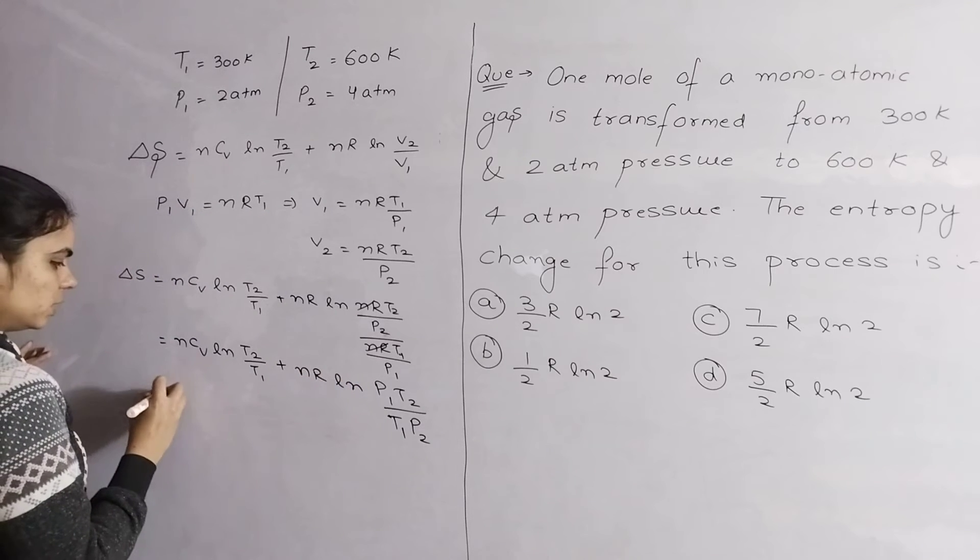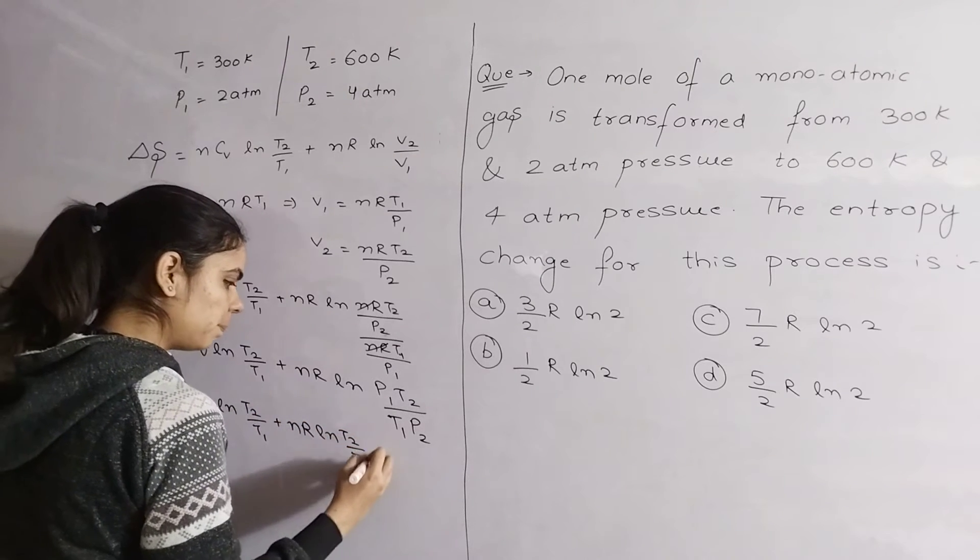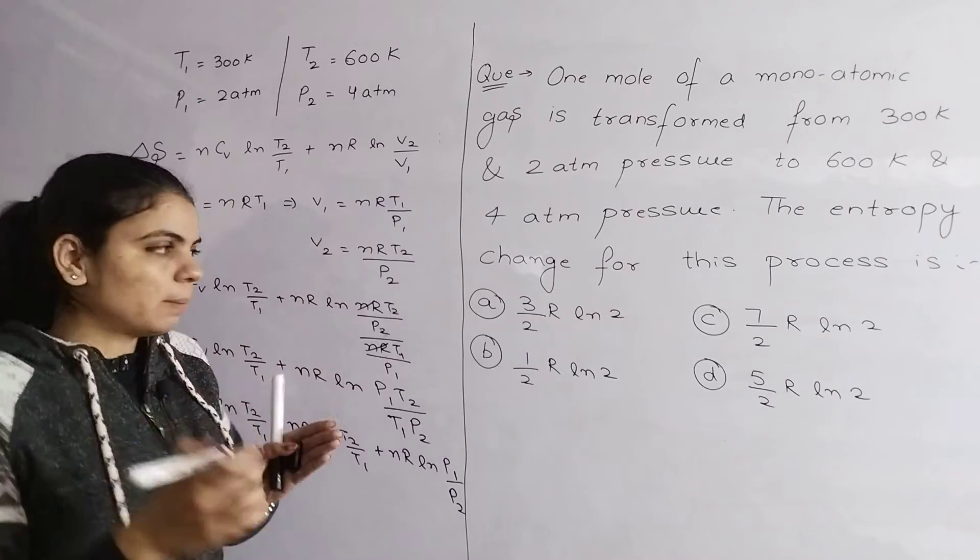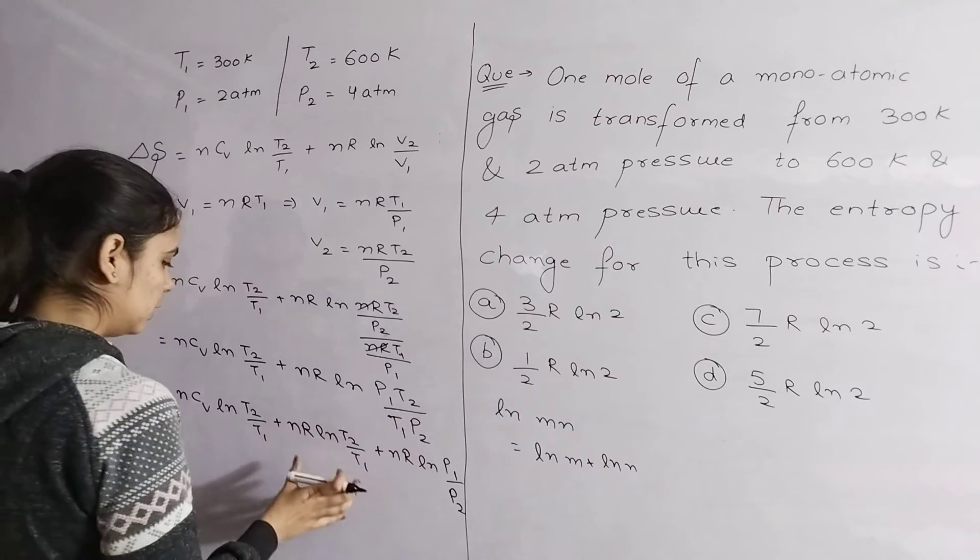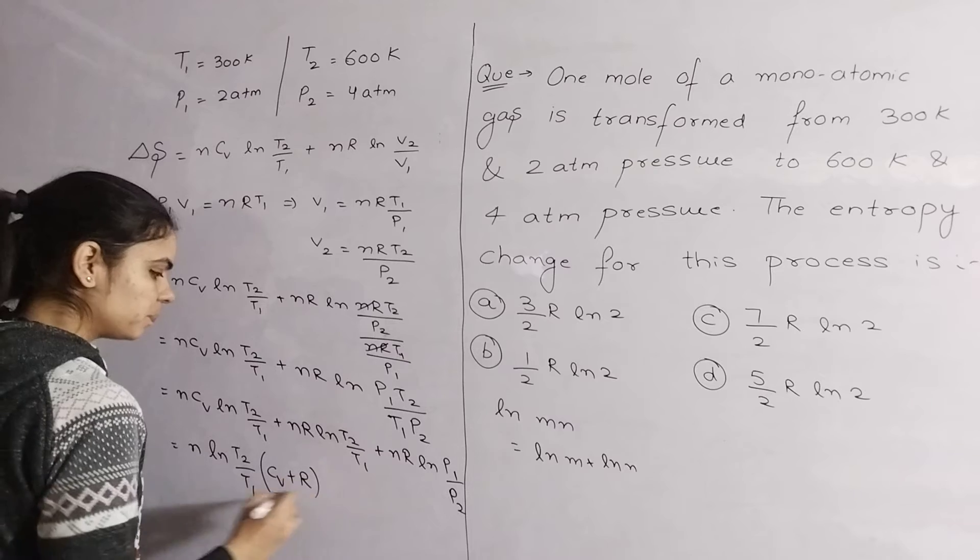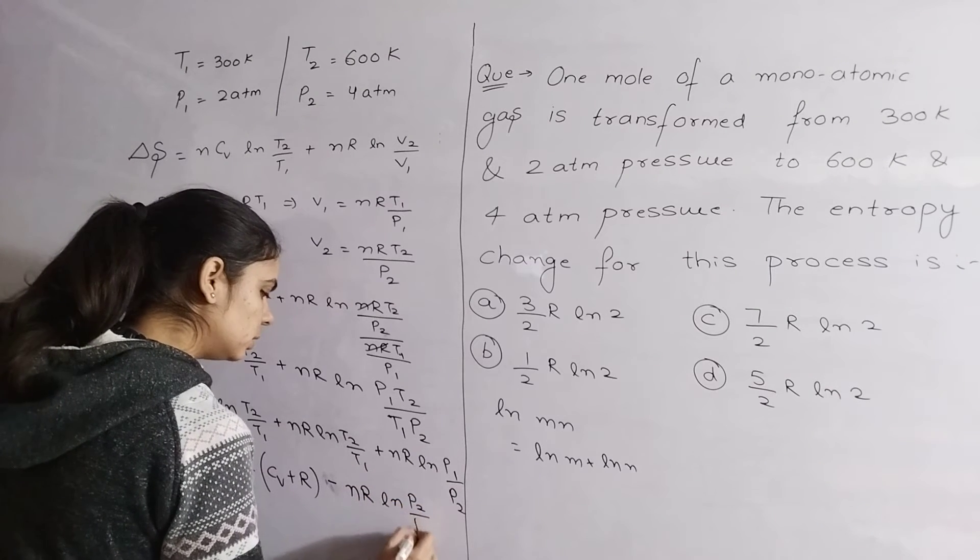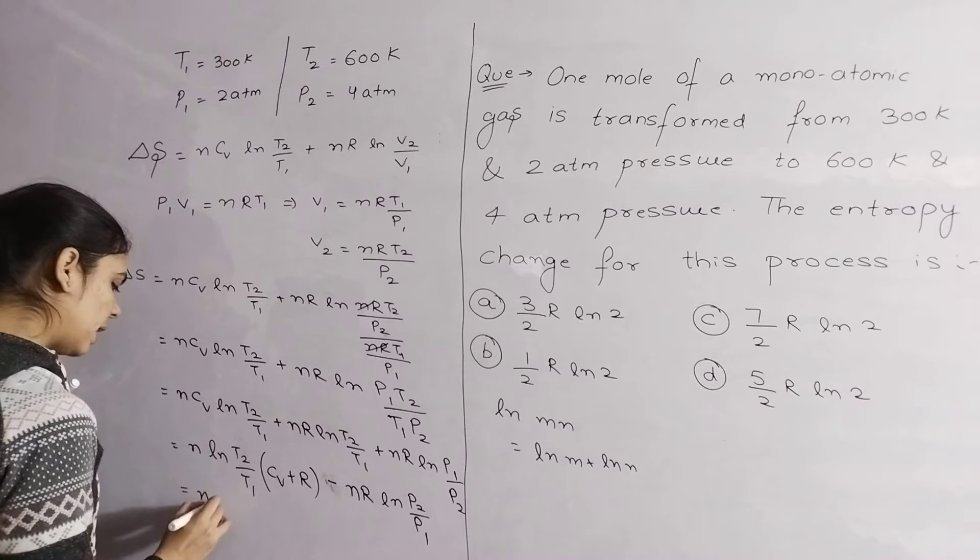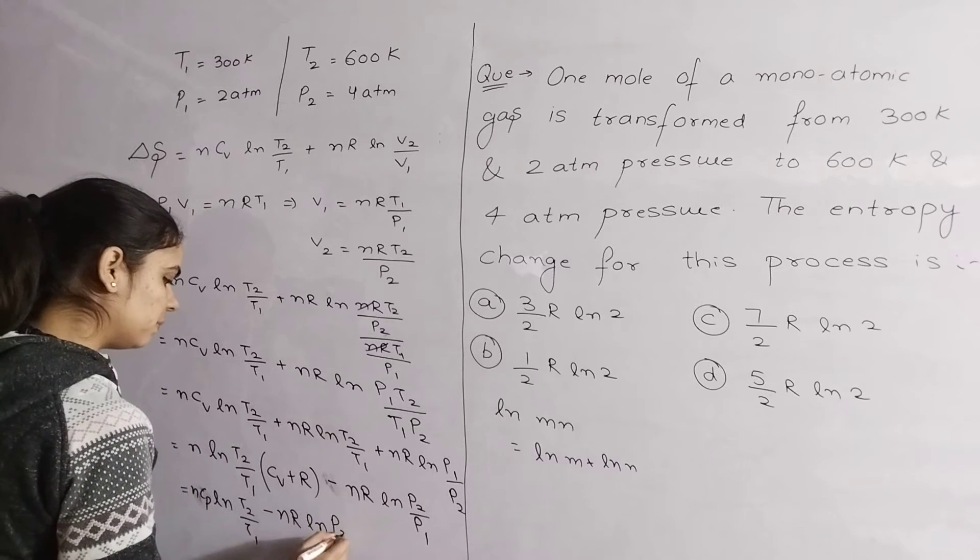How can we simplify this? NCV ln(T2/T1) plus NR ln(T2/T1) plus NR ln(P1/P2). Why? Because log M into N is log M plus log N. So here we can multiply it and separate it. N ln(T2/T1) is constant, then we can take CV plus R. And this CV plus R - since CP minus CV equals R - what will be equal to CP? So it will be N CP ln(T2/T1) minus NR ln(P2/P1). This is the expression.